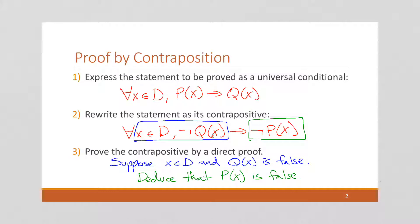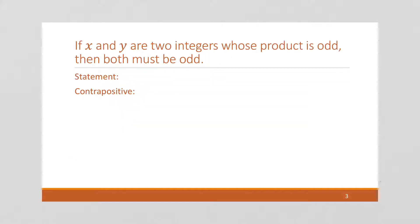Okay, so let's look at our next example. If x and y are two integers whose product is odd, then both must be odd. It's a little interesting to parse, but we're starting out by saying we have two integers, x and y. And if their product is odd, then x and y are both odd. So let's write that formally.